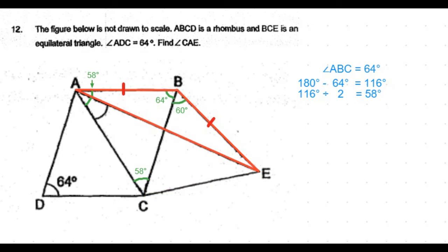Now consider triangle ABE. This is also an isosceles triangle because AB is equal to BC in the rhombus, and BC is equal to BE in the equilateral triangle. So AB is equal to BE.